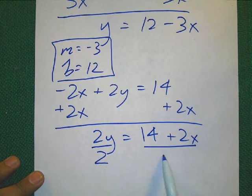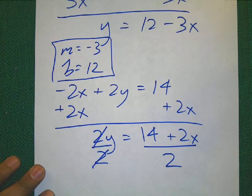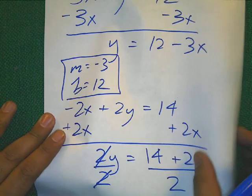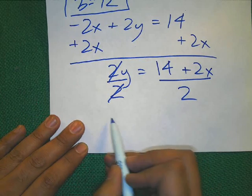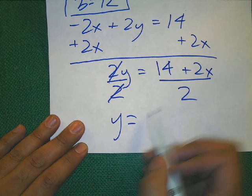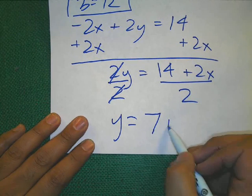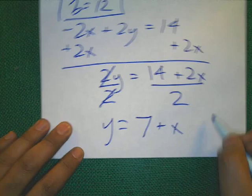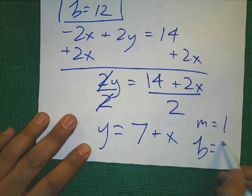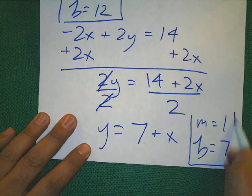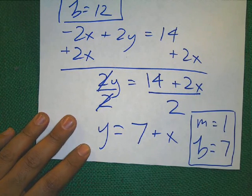It is divide. If I divide on one side, I need to... Do it to the other. These 2s cancel out. Let me move this page up. So now I'm left with y equals 14 divided by 2 is 7. 2 divided by 2 is x. So your slope is 1, your intercept is 7.